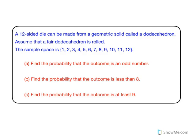In this question, we are given that a 12-sided die can be made from a geometric solid called a dodecahedron. We assume that a fair dodecahedron is rolled, so it has 12 sides. You know that our regular die, the one we're familiar with, has six sides with numbers 1, 2, 3...